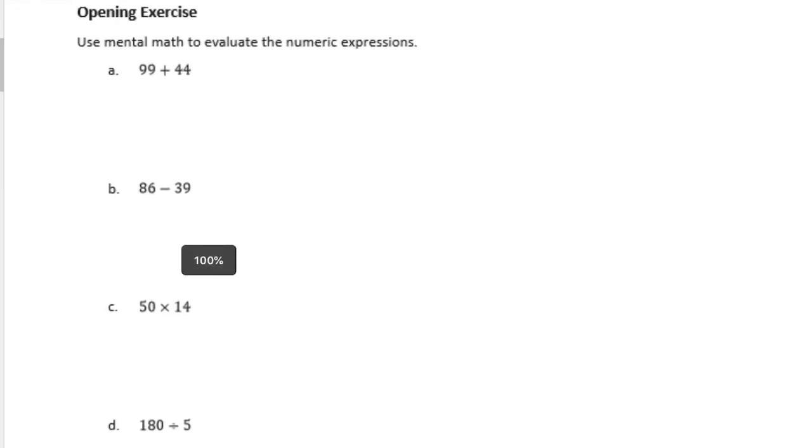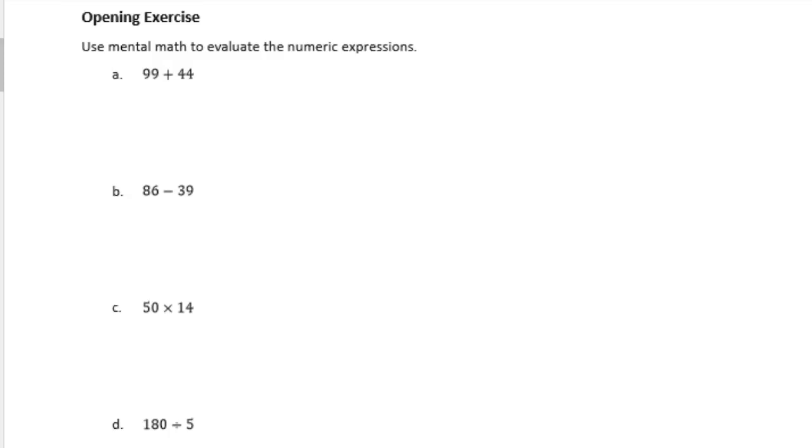99 plus 44. Here they don't want us to actually use a standard algorithm and add them together. It wants us to use mental math. First thing I notice is 99 is really close to 100, so I'm going to make that 100. Since I added one there, I need to take one away from 44. So I'm going to make it 100 plus 43, and I get 143. So 99 plus 44 would be 143.